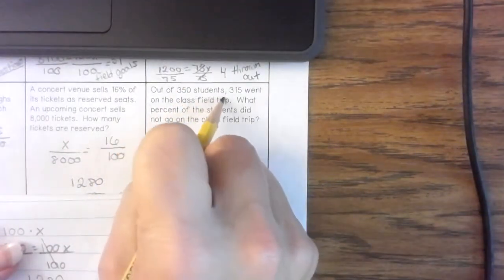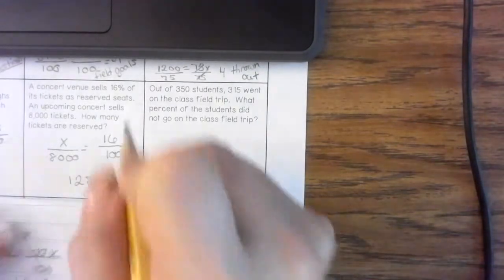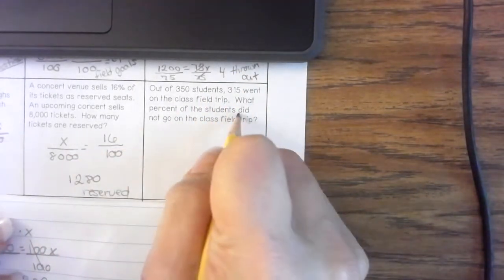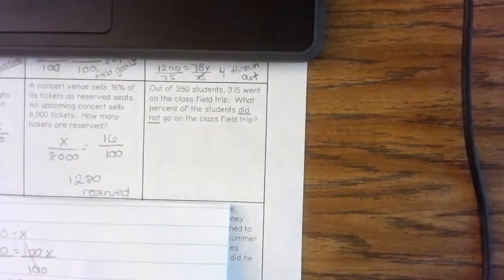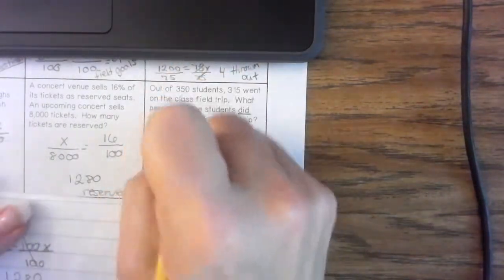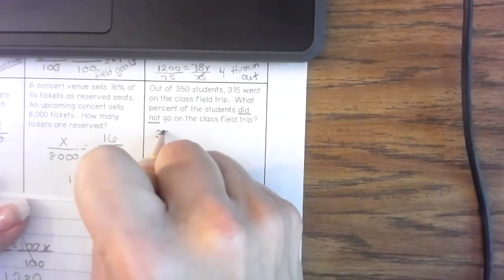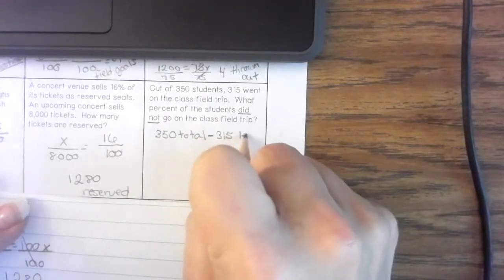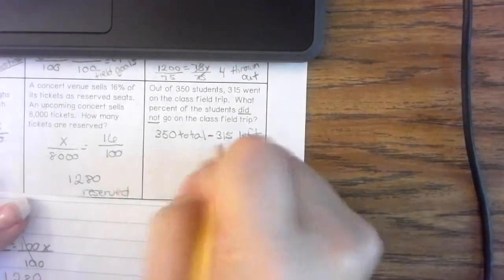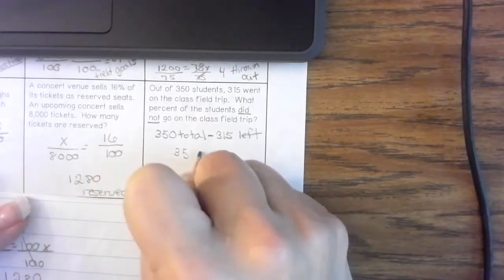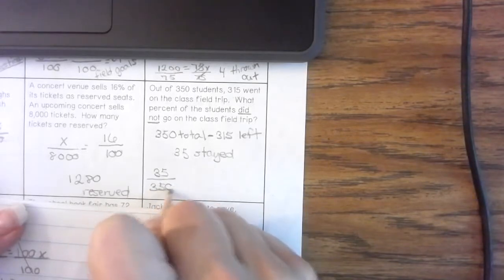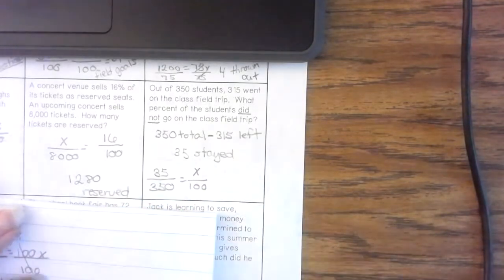Out of 350 students, 315 went on the class field trip. What percent of the students did not go on the class field trip? Did not go. So, what I need to figure out is, well, what is the amount that did not go? So, 315 went. So, I'm going to do 350, which is the total, minus 315 left on the field trip they went. That's going to leave me 35 stayed. So, 35 out of 350 stay behind. And I need to find that percent.